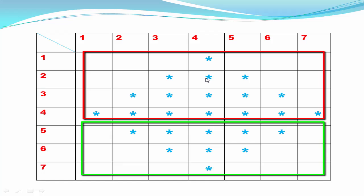In the upper portion, stars are printed in increasing order: first print one star, then three stars, then five stars, then seven stars. In the lower portion, stars are printed in decreasing order: first five stars, then three stars, and finally one star. These two patterns are opposite to one another, and if we merge them we get the diamond shape pattern.